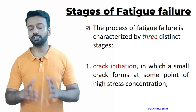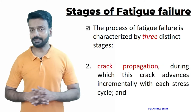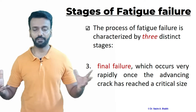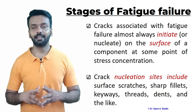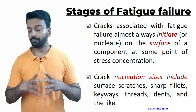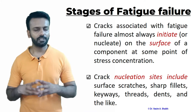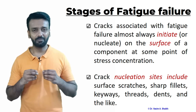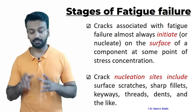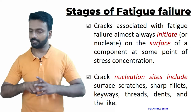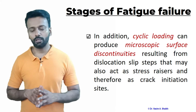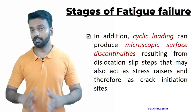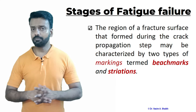Let us look at the different stages of fatigue failure. The first stage is crack initiation, where the crack starts to form. The second stage is crack propagation, where the crack grows. The third stage is final rupture or fracture, where the material fails and breaks into two pieces. Crack initiation almost always occurs at stress concentrators — locations such as sharp corners, keyways, impurity atoms, dents, or scratches.